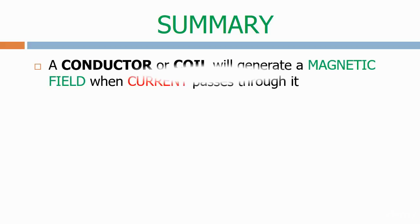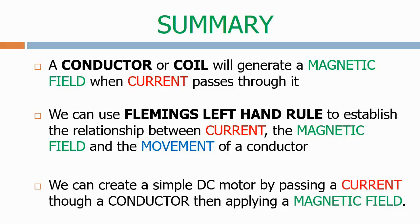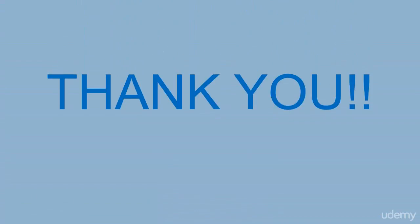Let's now summarise what we've learned today. A conductor or coil will generate a magnetic field when current passes through it. We can use Fleming's left hand rule to establish the relationship between current, the magnetic field, and the movement of the conductor. Finally, we can create a simple DC motor by passing a current through a conductor and then applying a magnetic field. Congratulations for completing this section, which has been quite tricky, so feel free to replay it if things don't make sense. I've attached some test questions in the course content — please try them before going on to the next section, which will go into detail on the subject of alternating current.